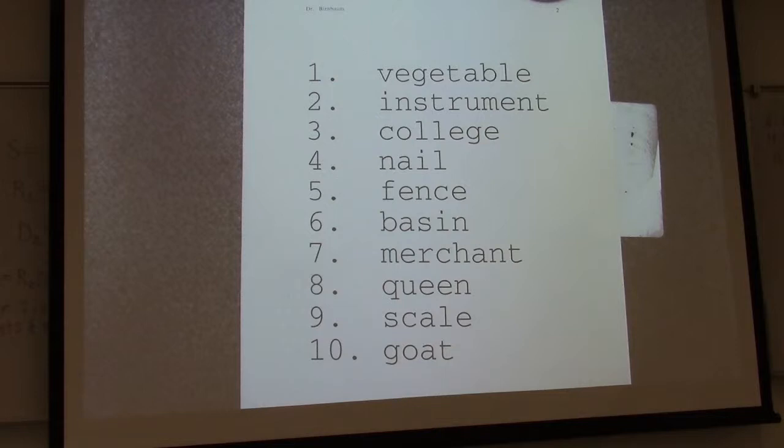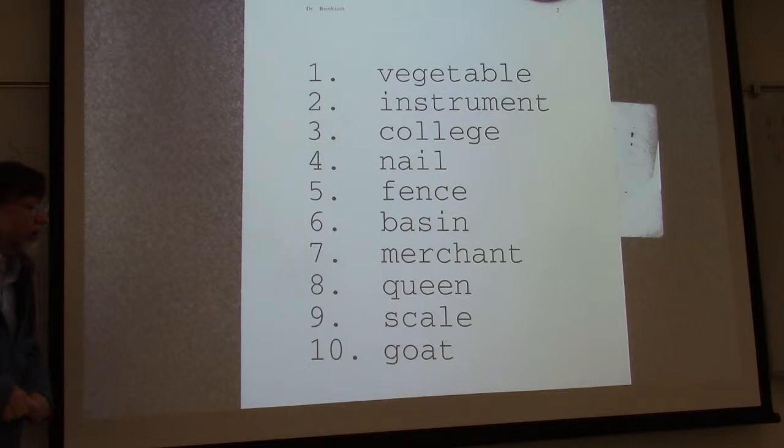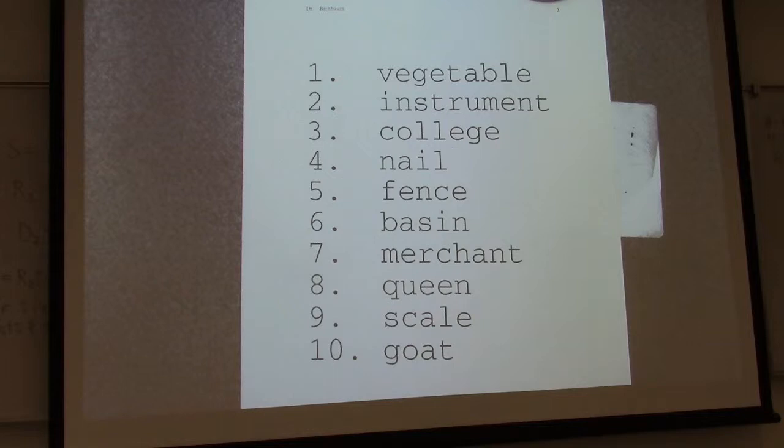All right, let's check it out and see how you did. One was vegetable, two was instrument, three is college, four is nail, five is fence, six is basin, seven is merchant, eight is queen, nine is scale, and ten is goat. How many got all ten? A couple people. How many got nine, eight — pretty good — seven, six, fewer than six?